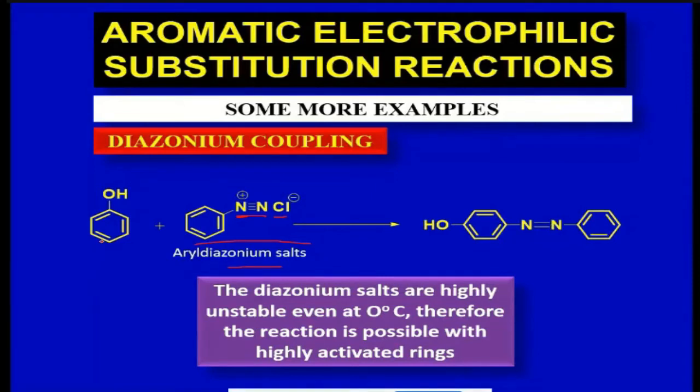Here you see we have a para substituted phenol. These pi electrons attack the nitrogen atom here, and the electrons are shifted towards this nitrogen which has positive charge.